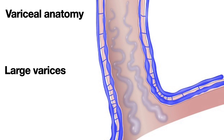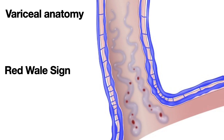Here are large esophageal varices. As the veins become larger, the wall sometimes becomes thinner, and you can see blood in the vein as red wale spots or red wale signs. These are signs of increased risk for bleeding.